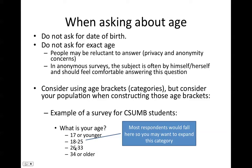The categories could be: 17 or younger, 18 to 25, 26 to 33, or 34 or older. Notice all possible ages are included — that makes it a collectively exhaustive list. And it's mutually exclusive because no age falls in more than one category. So 34 is only found in the last category, 32 only in the 26–33 category, 20 only in the 18–25 category, and 17 only in the first. It's both collectively exhaustive and mutually exclusive.